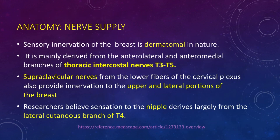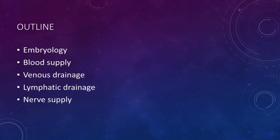Lastly, regarding the nerve supply of the breast: sensory innervation is dermatomal in nature, mainly derived from the anterolateral and anteromedial branches of the thoracic intercostal nerves T3 to T5. Supraclavicular nerves from the lower fibers of the cervical plexus also provide innervation to the upper and lateral portions of the breast. Researchers believe sensation to the nipple derives largely from the lateral cutaneous branch of T4.